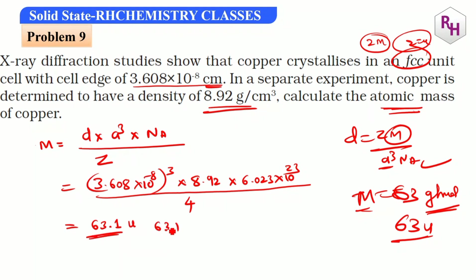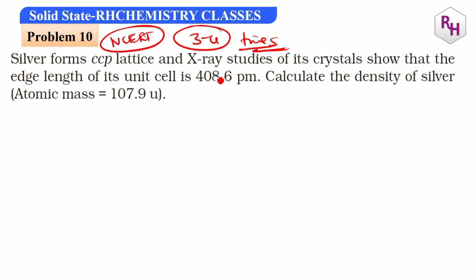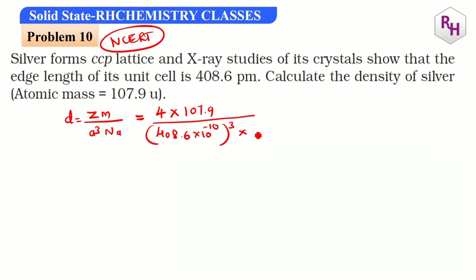Famous NCRT problem: silver in CCP (Z = 4), M = 107.9 g/mol, a = 408.6 pm = 408.6 × 10⁻¹⁰ cm. Substituting into the density formula with NA = 6.023 × 10²³ gives a density of approximately 10.5 g/cm³.